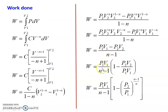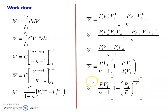The work done for the polytropic process is given by two equivalent equations: W = (P1V1 − P2V2) / (n − 1), or W = [P1V1 / (n − 1)] × [1 − (P2/P1)^((n−1)/n)]. These two equations are important.